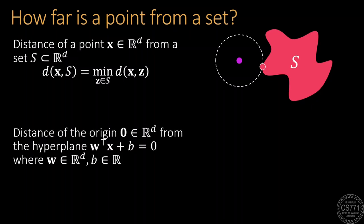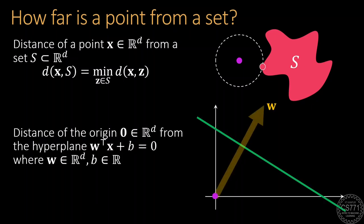To simplify things, let's start by asking how far is the origin from the hyperplane, where W is the normal vector to the hyperplane. Looking at this picture, it seems to suggest that the point closest to the origin must lie along the normal vector. However, looks can be deceiving, especially in high dimensions. So, let us try to prove this fact mathematically.